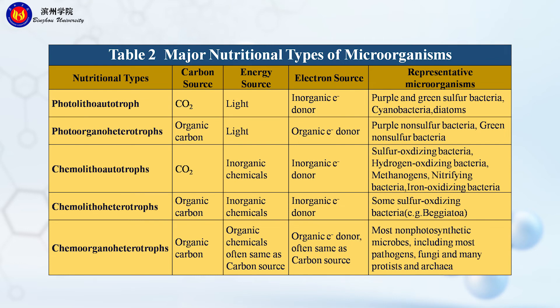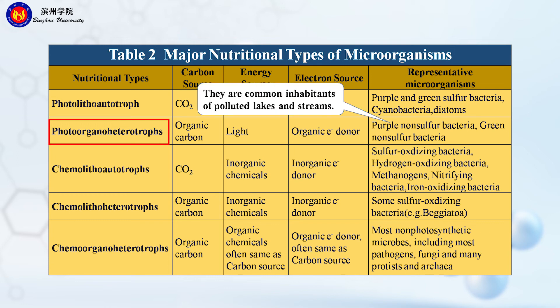The fourth type is photo-organoheterotrophs. These microbes use organic carbon as their carbon source, light as their energy source, and organic molecules as their electron sources. Examples include purple non-sulfur bacteria and green non-sulfur bacteria. They are common inhabitants of polluted lakes and streams.